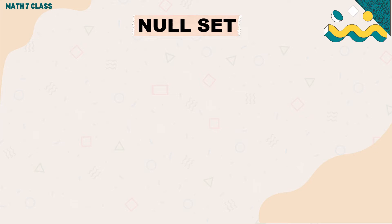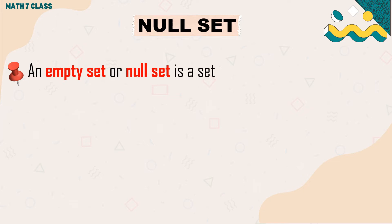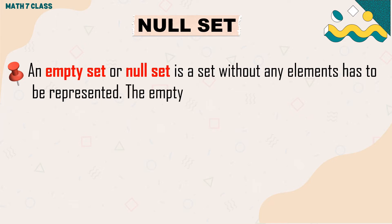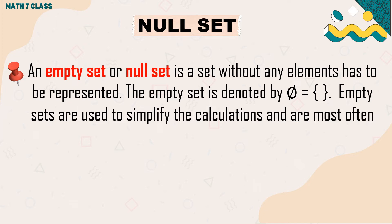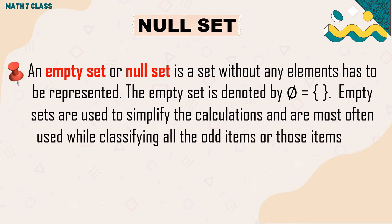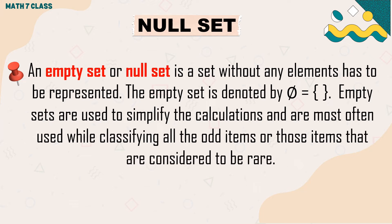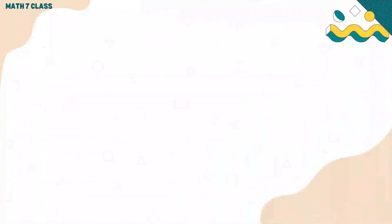Next, we're going to discuss the null set. An empty set or null set is a set without any elements. The empty set is denoted by the empty set symbol. Empty sets are used to simplify calculations and are most often used while classifying items that are odd or considered to be rare.